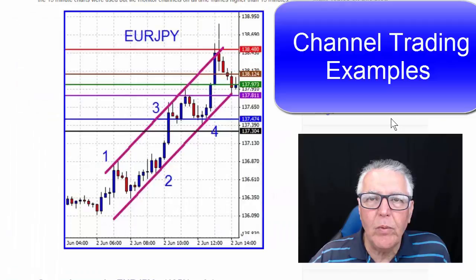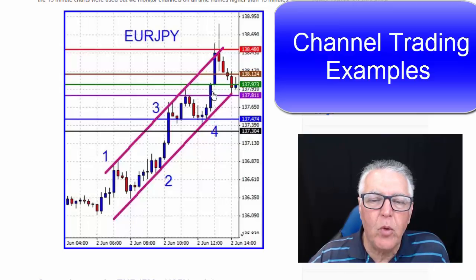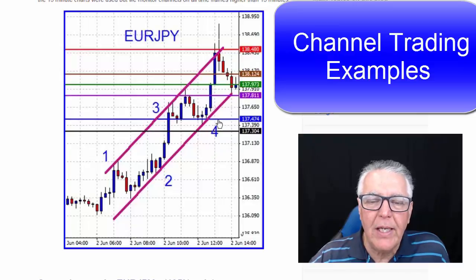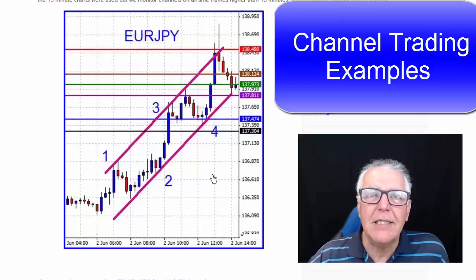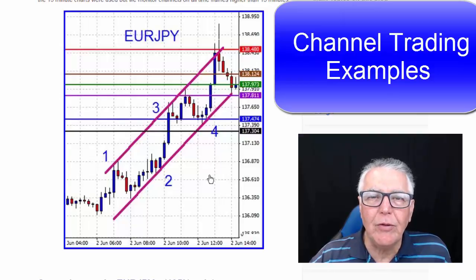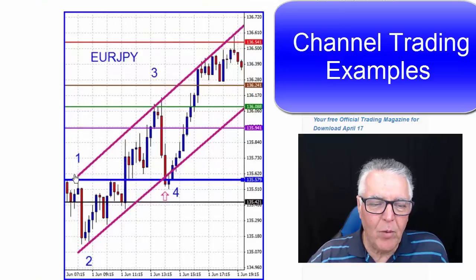A more conventional channel trade with the trend: we had a one-two-three bounce, then it came around and bounced at number four, so we traded number four to number five, which worked out perfectly. The blue line here is the entry, the three top-ups followed after that, and the target was at the red line at the top. Again, a successful double-in-a-day trade using channel trading.